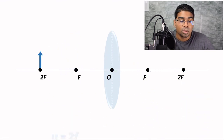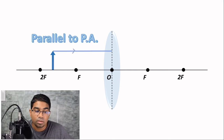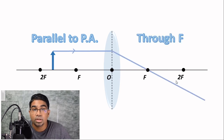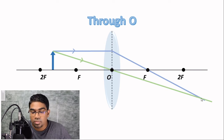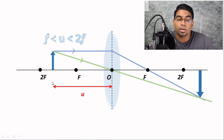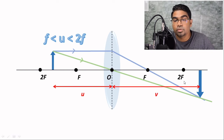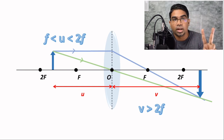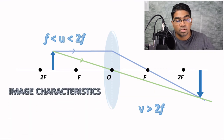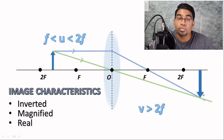Let's bring the object even closer, placing it between one and two focal lengths from the lens. Drawing parallel to the principal axis through the focal point, and another ray through the optical center, the image forms further out. The object distance is between f and 2f, and the image distance is now greater than two focal lengths. The image characteristics: it is still inverted, it is magnified — larger than the object — and it is a real image. If we place a screen there, we can capture the image.